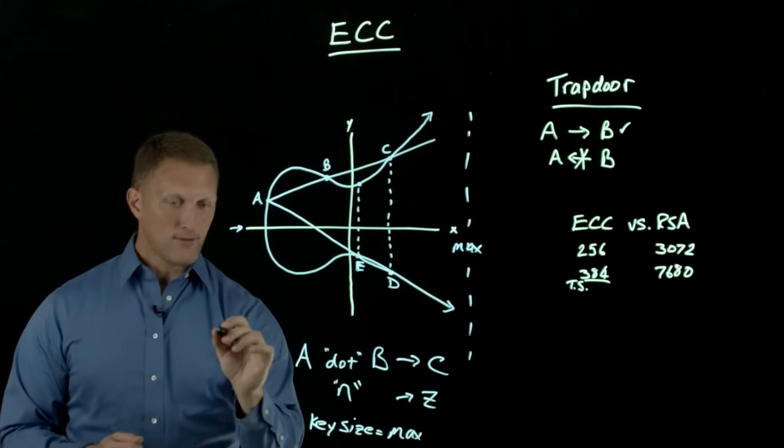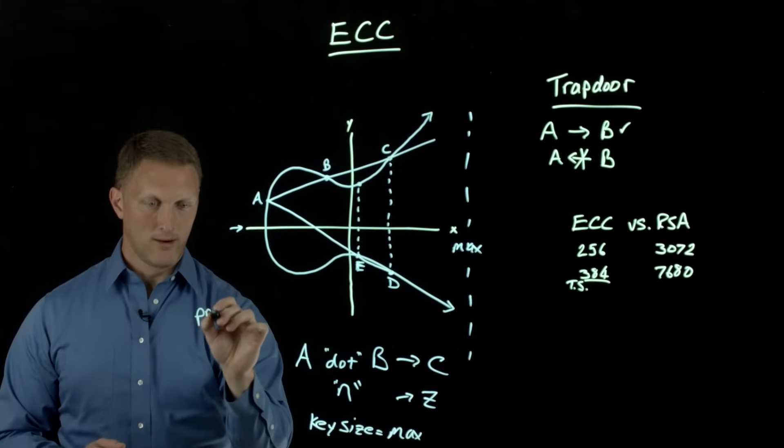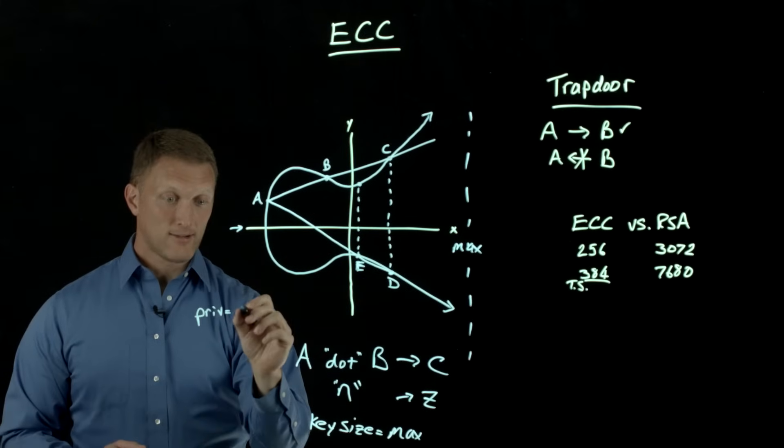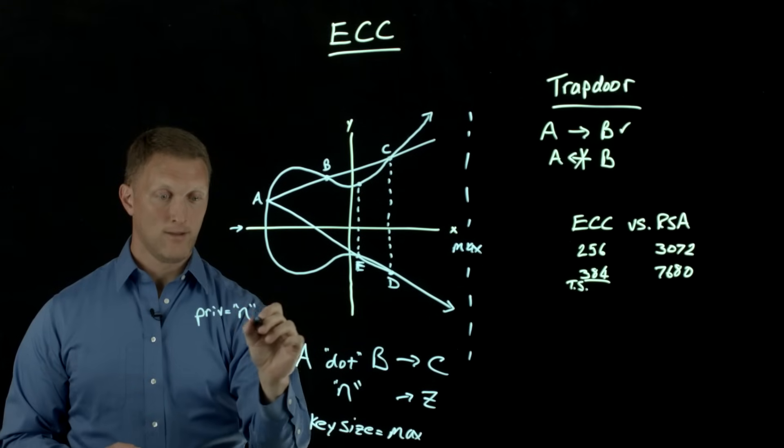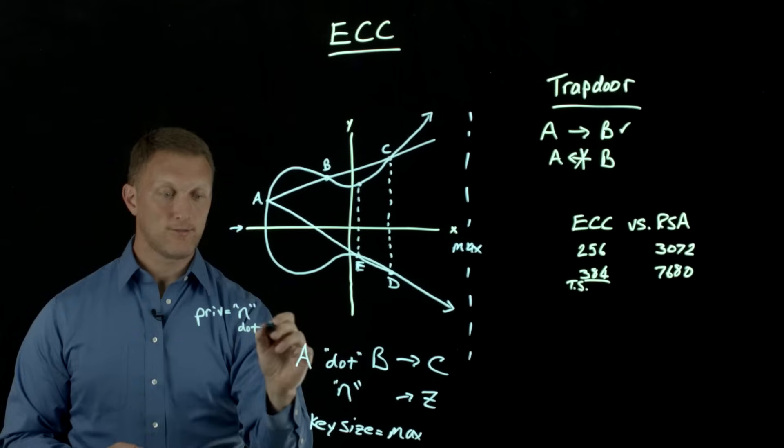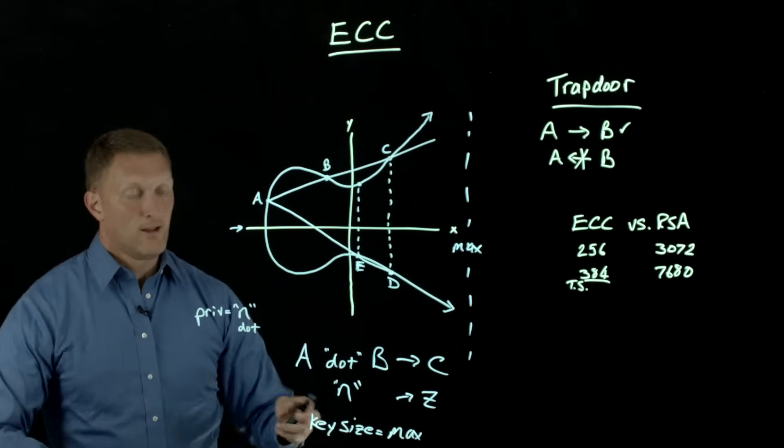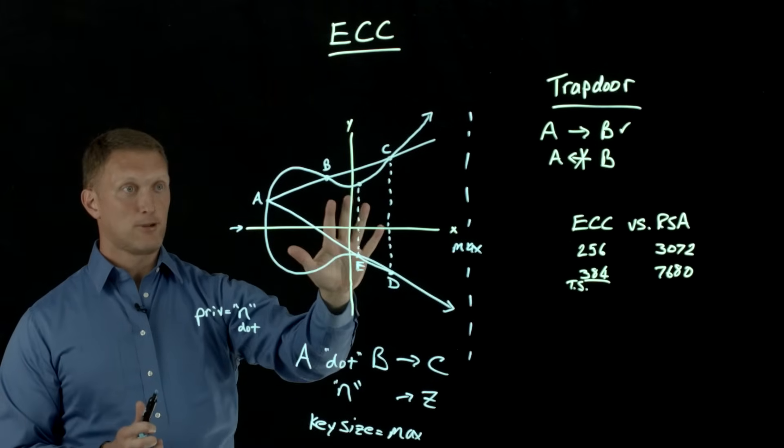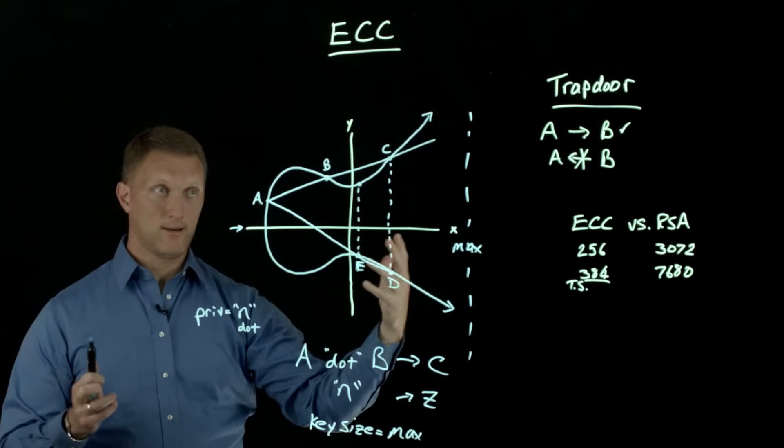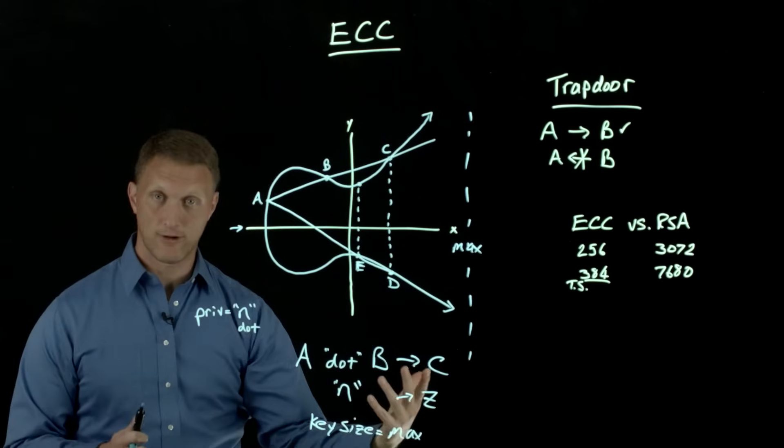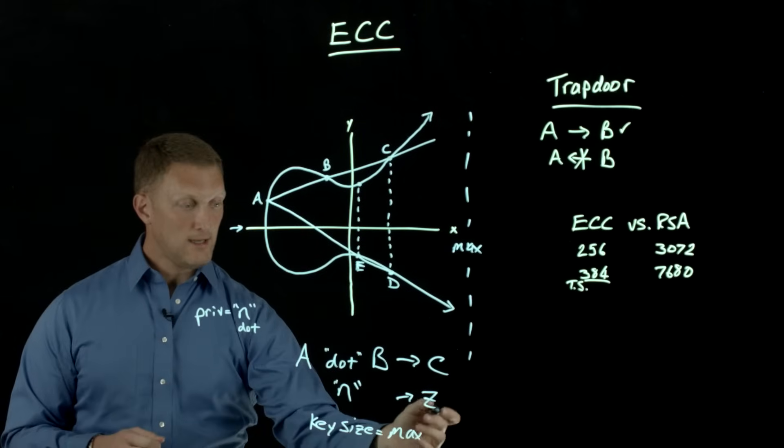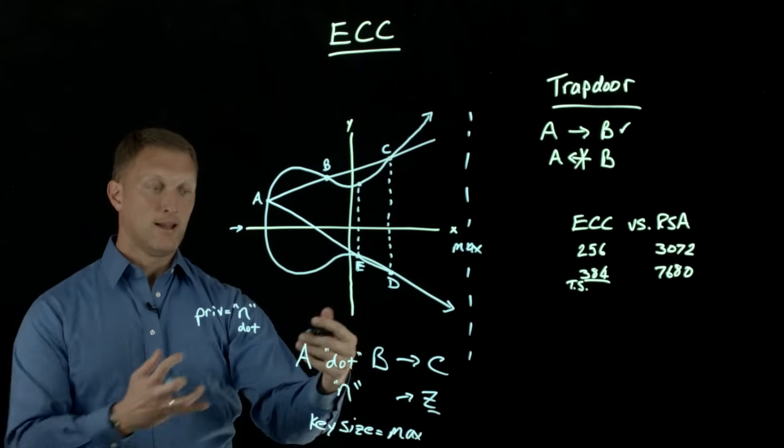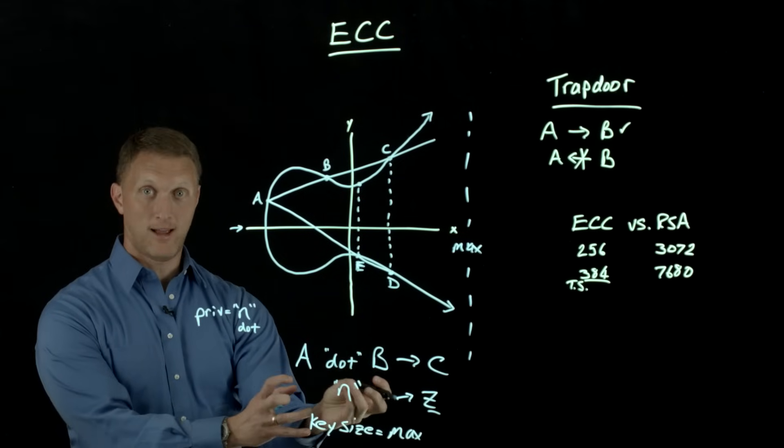The other thing I was going to mention is the private key. So I'll put private over here. The private key in an elliptic curve crypto system is actually this N, which is the number of times that you've dotted this thing with itself. To kind of recap a little bit, in elliptic curve crypto system, you have a function that's defined or you have a curve that's defined by a math function. You have a starting point A, you have an ending point Z, and then you're going to dot this thing with itself a secret number of times, an N number of times.